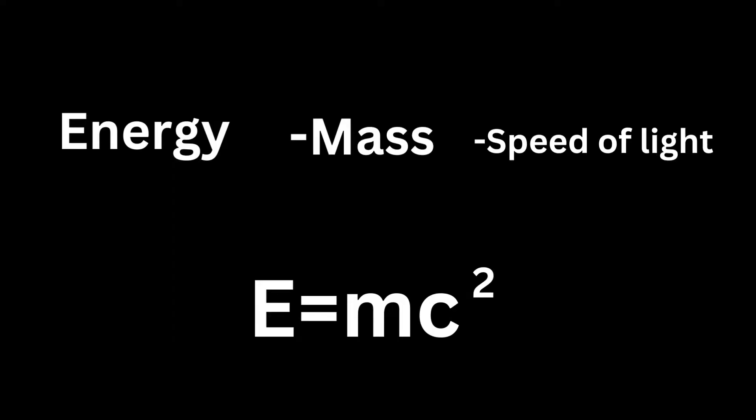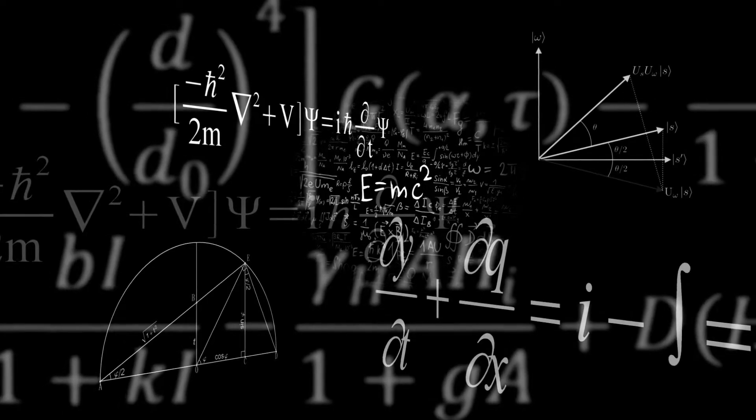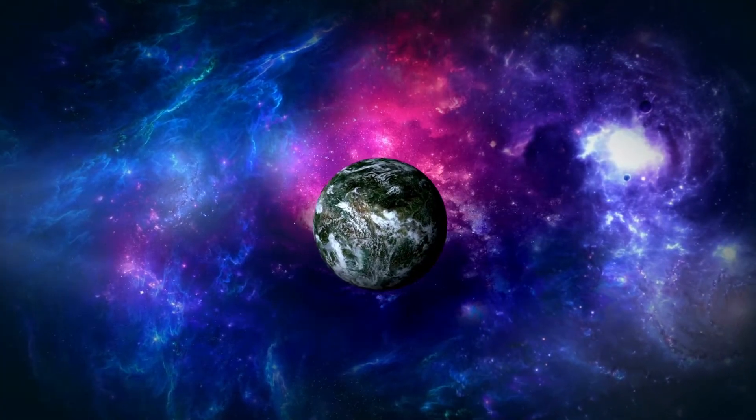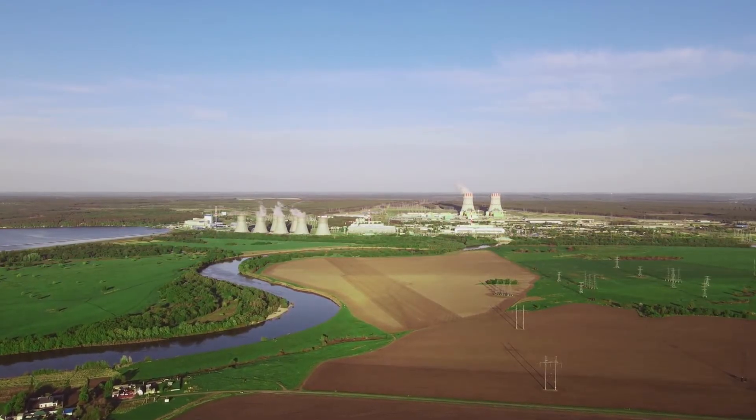E equals mc squared provides a fundamental connection between energy, mass, and the speed of light. It is a profound equation, and its effects on physics have been profound, influencing how we perceive the cosmos and opening the door to new innovations like nuclear energy.